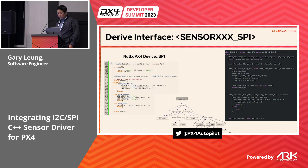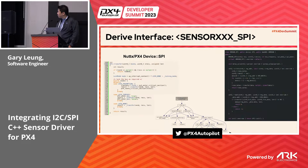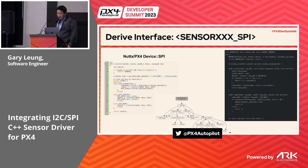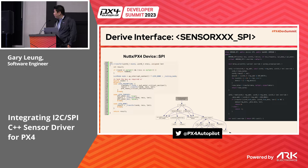On the SPI side, the first byte would be the address and the instruction, depending on how you interpret the sensor driver to differentiate the read and write calls.